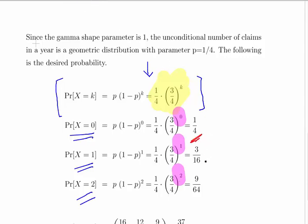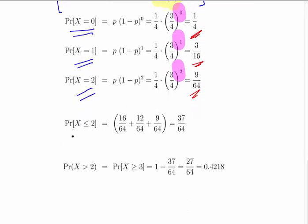We get 1 quarter, or 3 over 16 for the probability of X equals 0, 3 over 16 for the probability of X equals 1, and 9 over 64 for the probability of X equals 2.